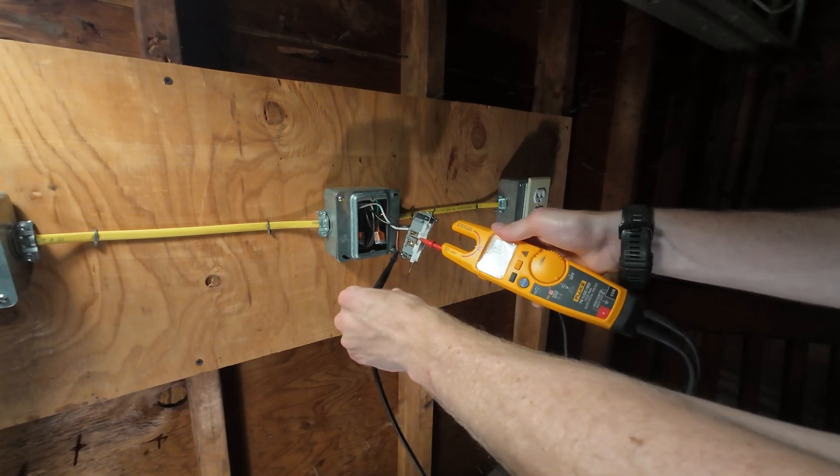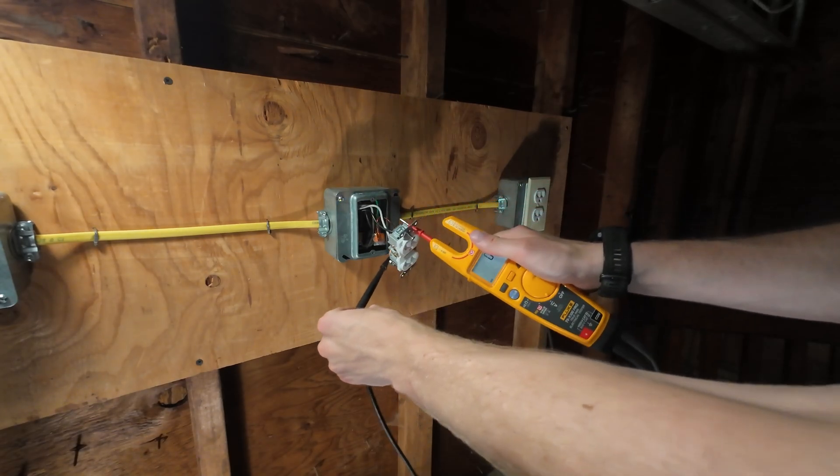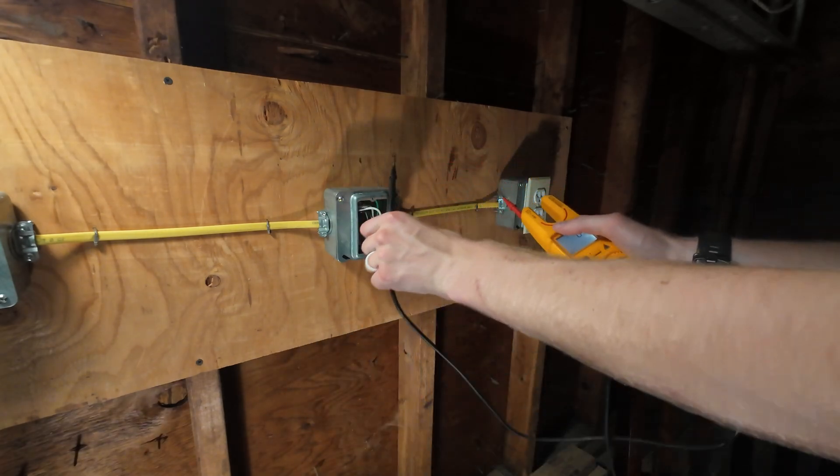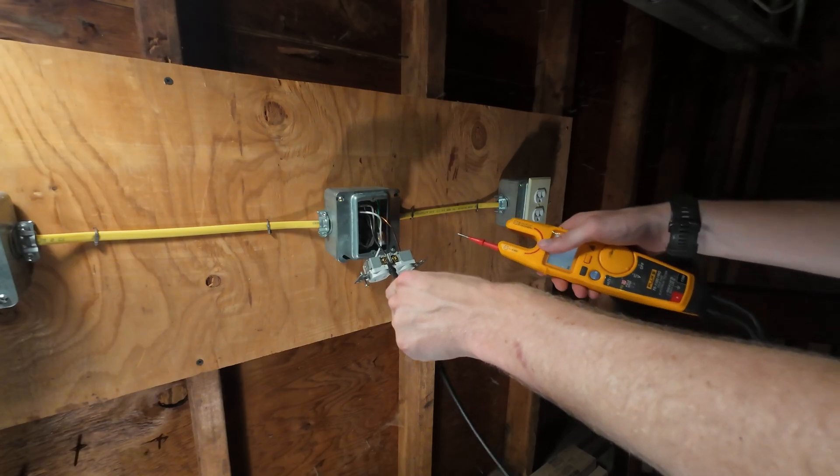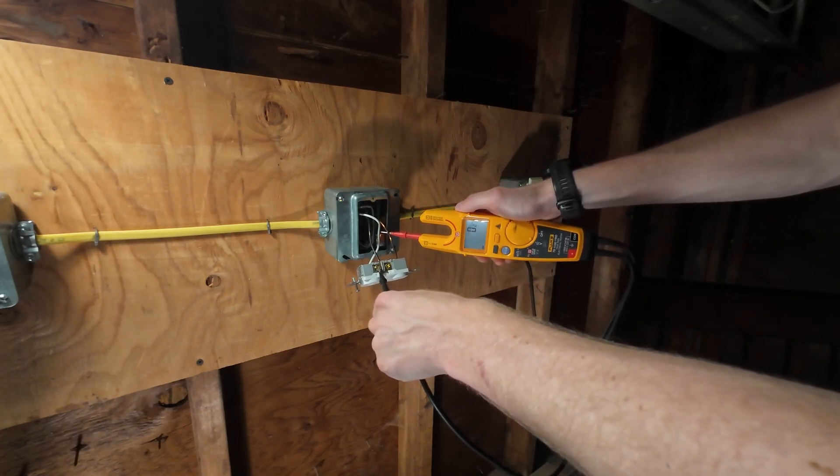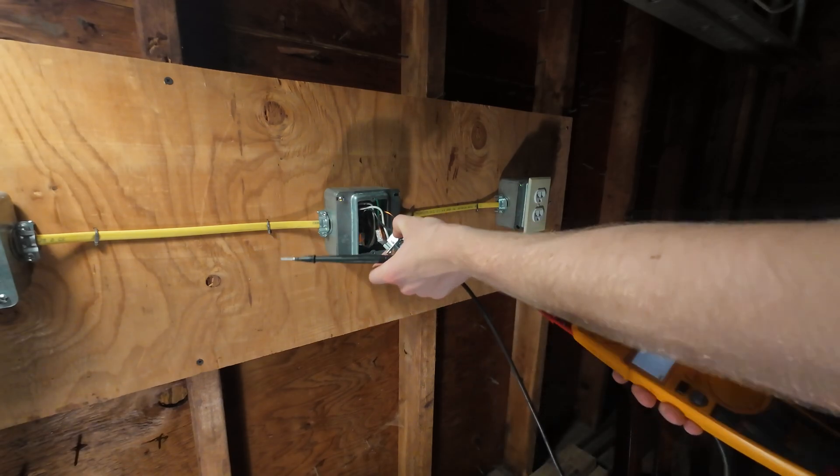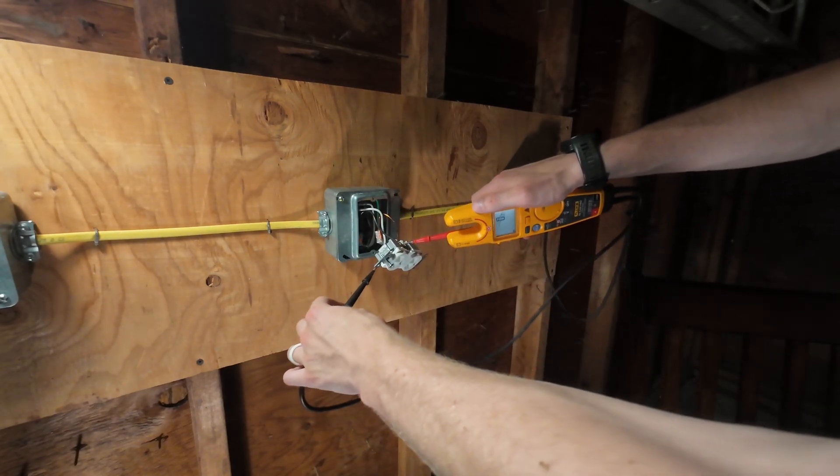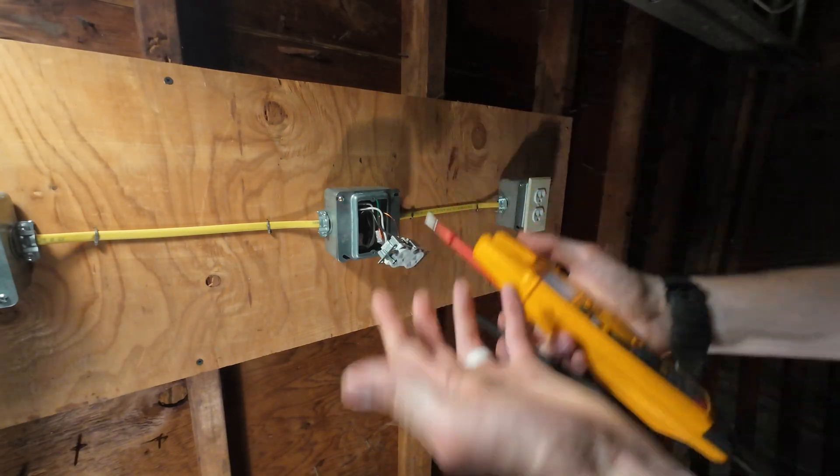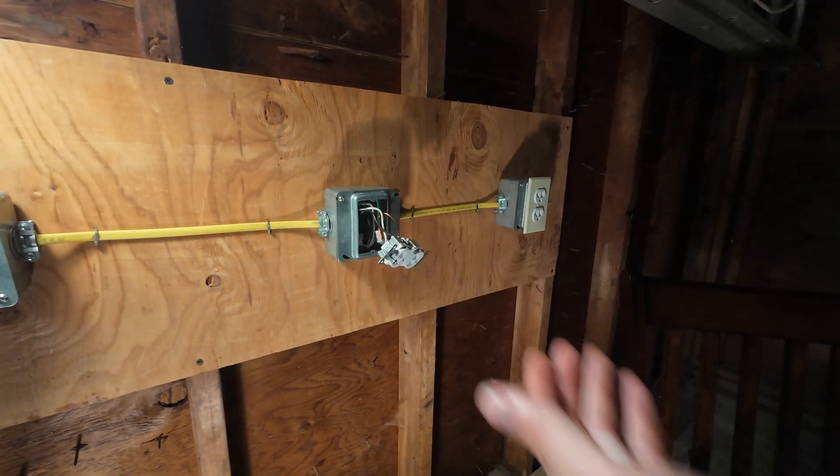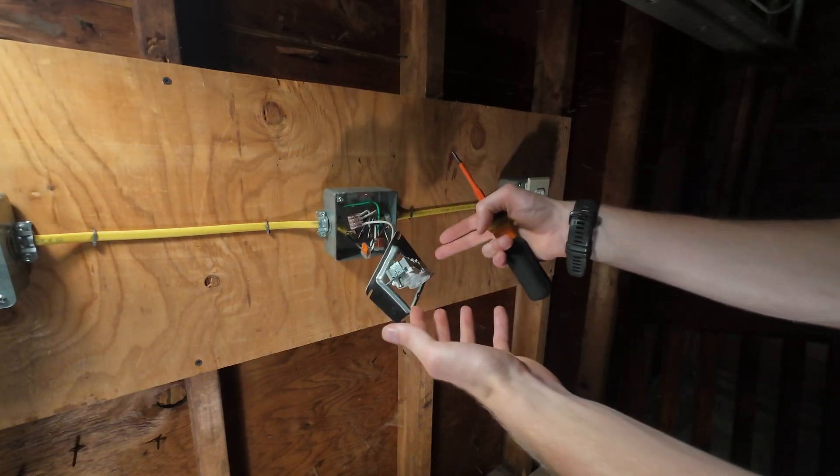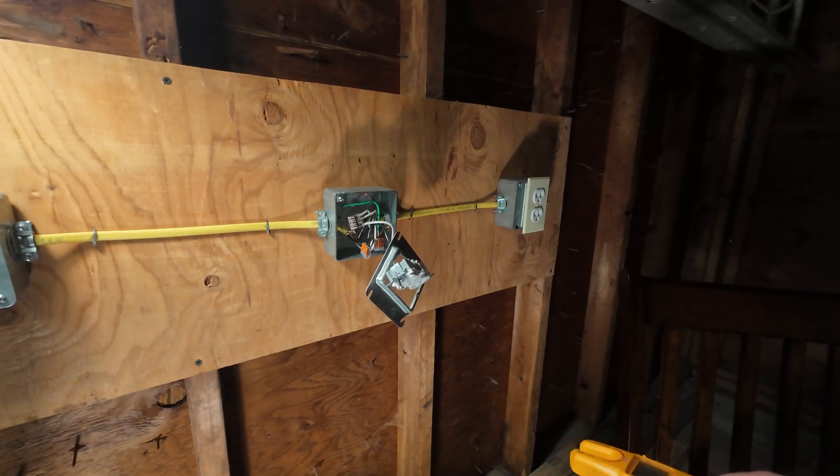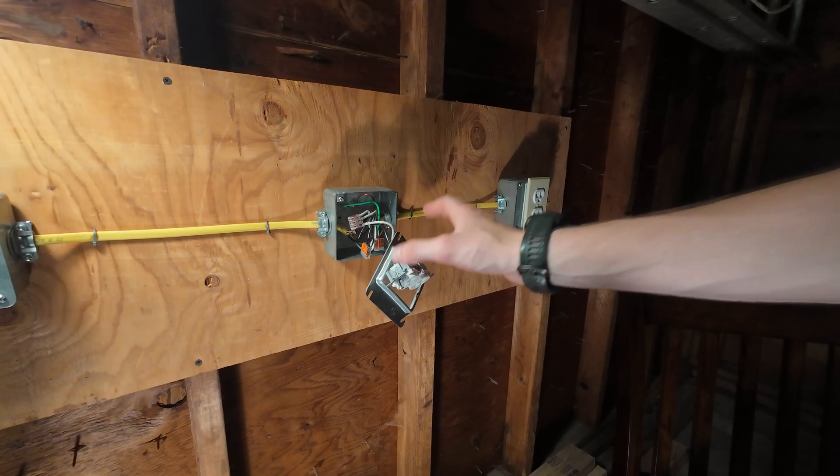So you remove the leads and I like to go from my white, which is my neutral, and I go to my ground. Let me turn the light on. You can see zero volts. Next I like to go from my hot, which is going to be my black, to my ground. I have zero volts. And lastly, I like to go from my hot to my neutral—zero volts. We know there's no voltage present, we know we can safely work on this.